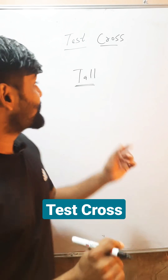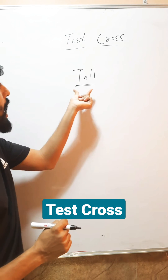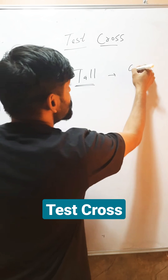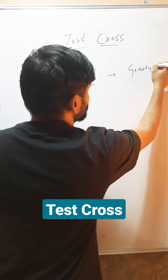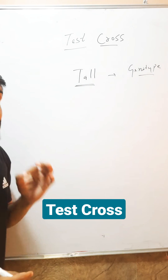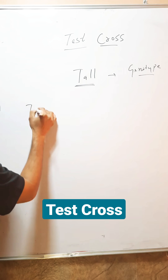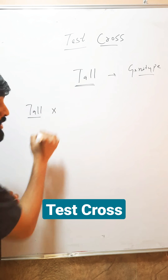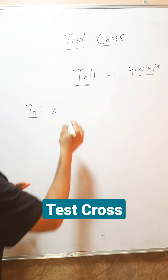Suppose I have this tall plant and I do not know its genotype. To know its genotype, what I will do? I will cross this tall with the recessive dwarf.